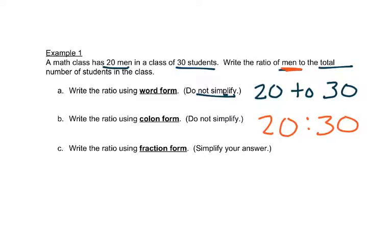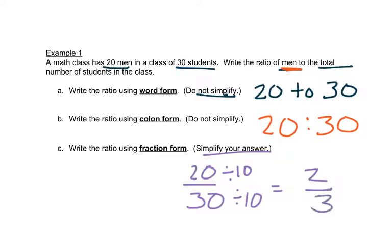And the final way we can write a ratio is in fraction form. The word that's been mentioned first is the number that goes on top. So we have 20 over 30 and this does say to simplify so we'd want to divide both by 10 to reduce those fractions. We have 2 to 3 and that's how we read that because it's still a ratio.